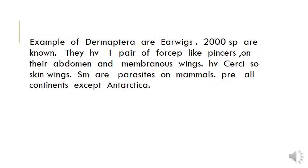Examples of Dermaptera are earwigs. About 2000 species are known. They have one pair of forcep-like pincers on their abdomen and membranous wings. They have cerci on skin wings. Some are parasites on mammals.